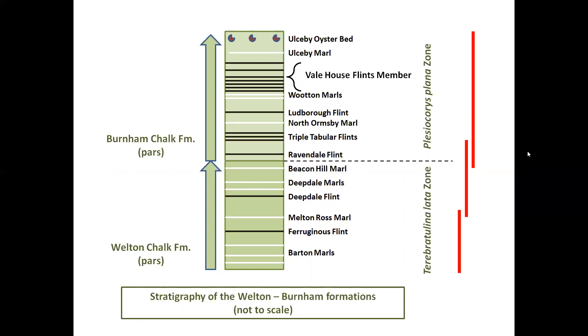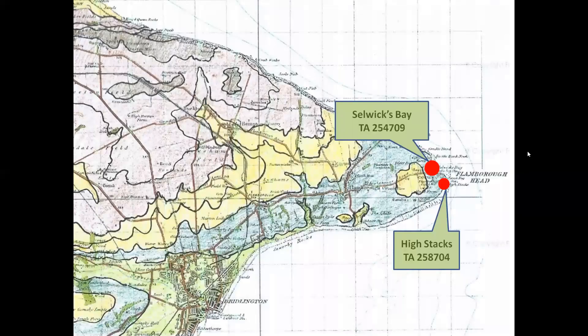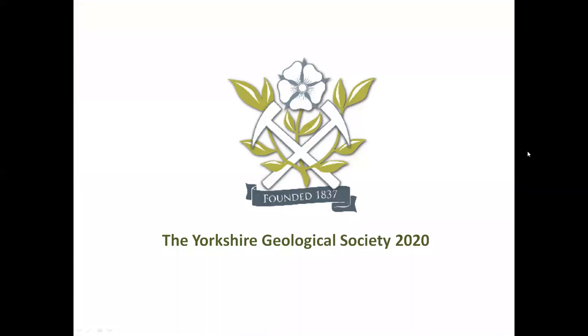We also noted the lowered base level of the glacial till and the infilled paleo valley. To continue this field trip, visit part 3, which will focus on Selwick Bay and High Stacks at the easternmost point of the headland. You'll get the opportunity to examine another zone of chalk deformation, find the junction of the Burnham and Flamborough chalk formations, and see more classic examples of features associated with marine erosion. Thank you for watching.